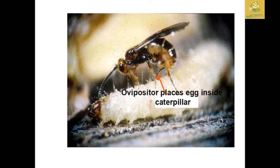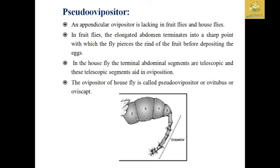A parasitic ovipositor is used to place eggs inside caterpillars. The appendicular ovipositor is lacking in fruit flies and houseflies. These are known as false or pseudo ovipositors. In fruit flies, the elongated abdomen has a short pointed tip used to pierce fruit before depositing eggs. In houseflies, terminally telescoping abdominal segments aid oviposition — this is known as the pseudo ovipositor, also called the oviscapt or oviductus.